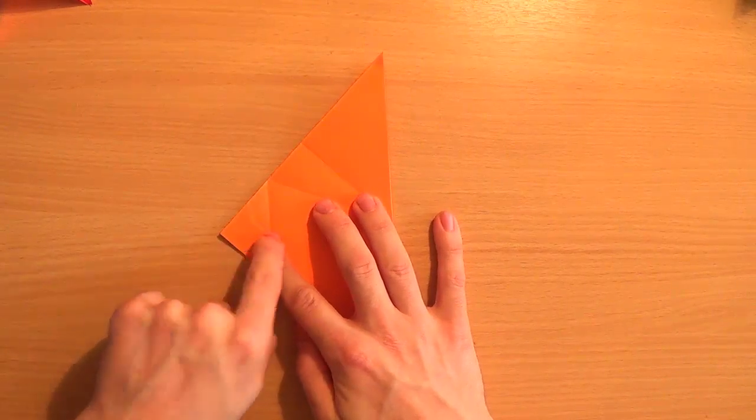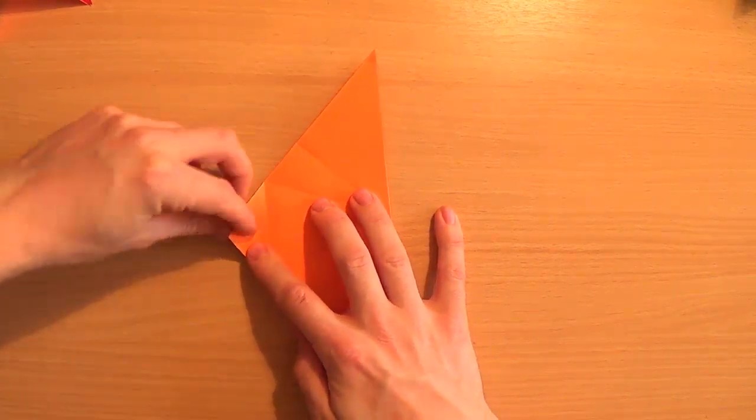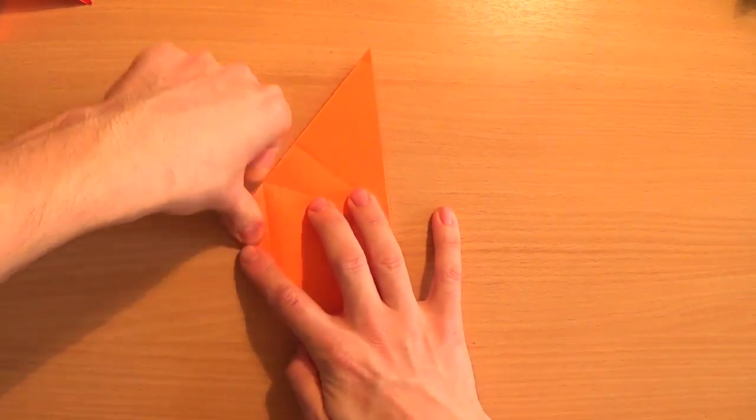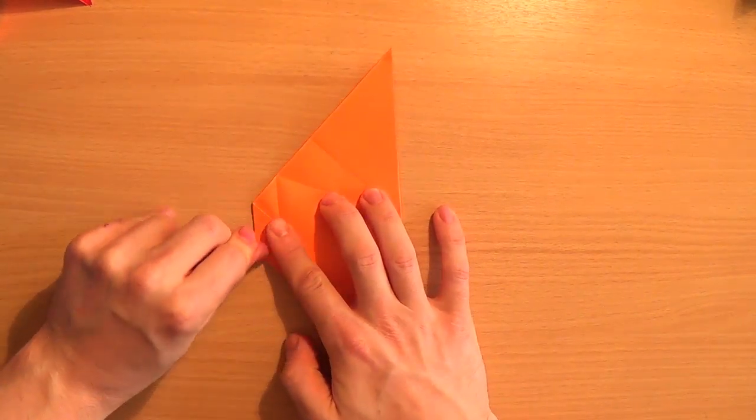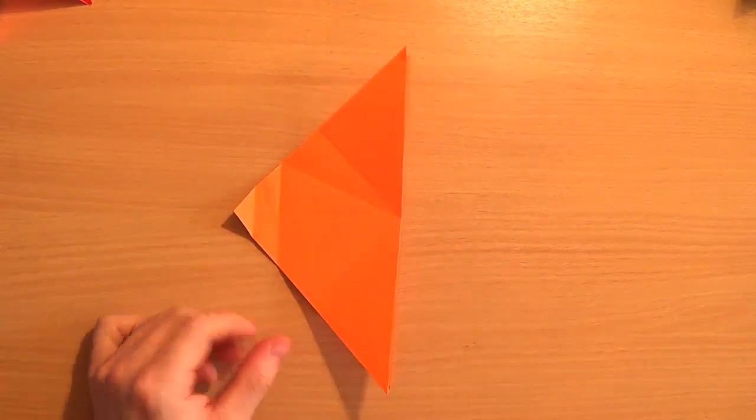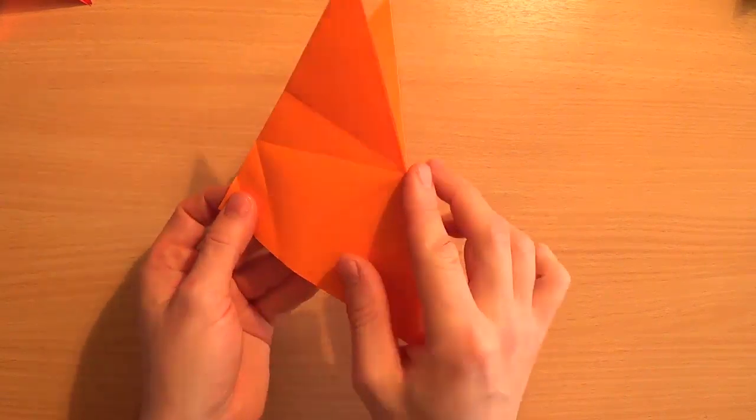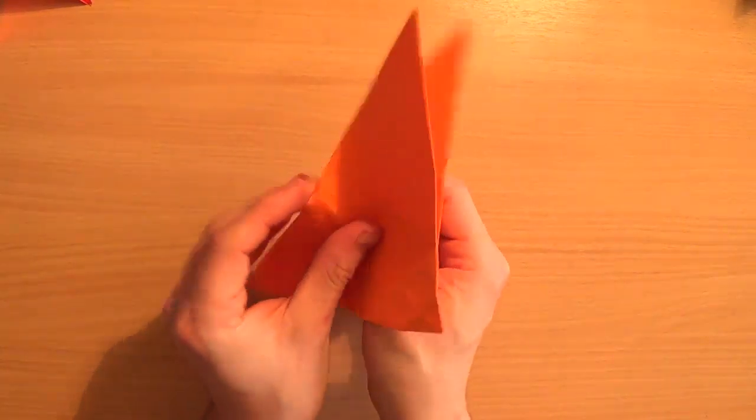And then we're going to fold the top point to that centre line that we've just made. And squash that one flat too. And unfold that one. Now, undo the whole water bomb base and put it flat.